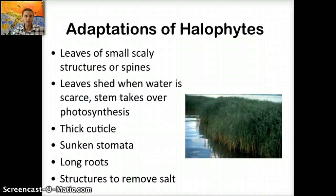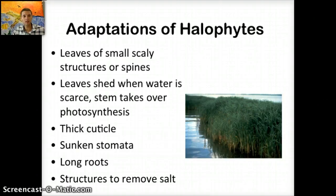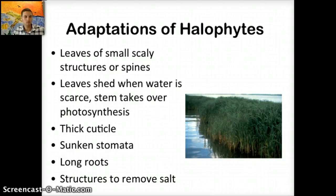The last topic is adaptations of halophytes — plants with adaptations to live in water of high salinity or areas of high salt. Somewhat similar to xerophytes, they have small, scaly leaf structures or spines. Sometimes they shed their leaves when water is scarce and the stem takes over photosynthesis. They have a thick cuticle, sunken stomata, long roots, and a structure to remove salt. These different structures allow halophytes to survive in high salinity environments.